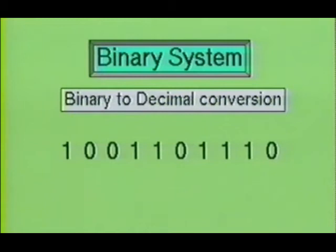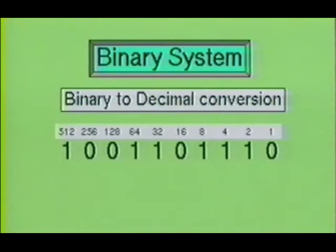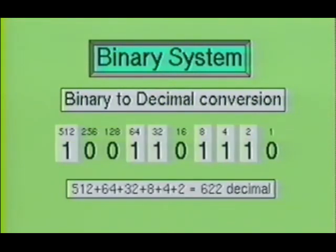Suppose we had a binary number that was 10 bits long, like the one shown. What would the decimal equivalent of this number be? First, we place our values above each of the bits, remembering that each value must double as it moves to the left. Then we simply add the values of each bit that has a 1. When we add 512 plus 64 plus 32 plus 8 plus 4 plus 2, we acquire the sum of 622 in decimal.